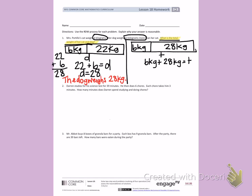So again, I will rewrite the problem vertically. 28 plus 6. 6 plus 8 is 14. 2 plus 1 is 3. T equals 34. Going back to the question, what is the total weight of her cat and dog? The total weight is 34 kilograms.